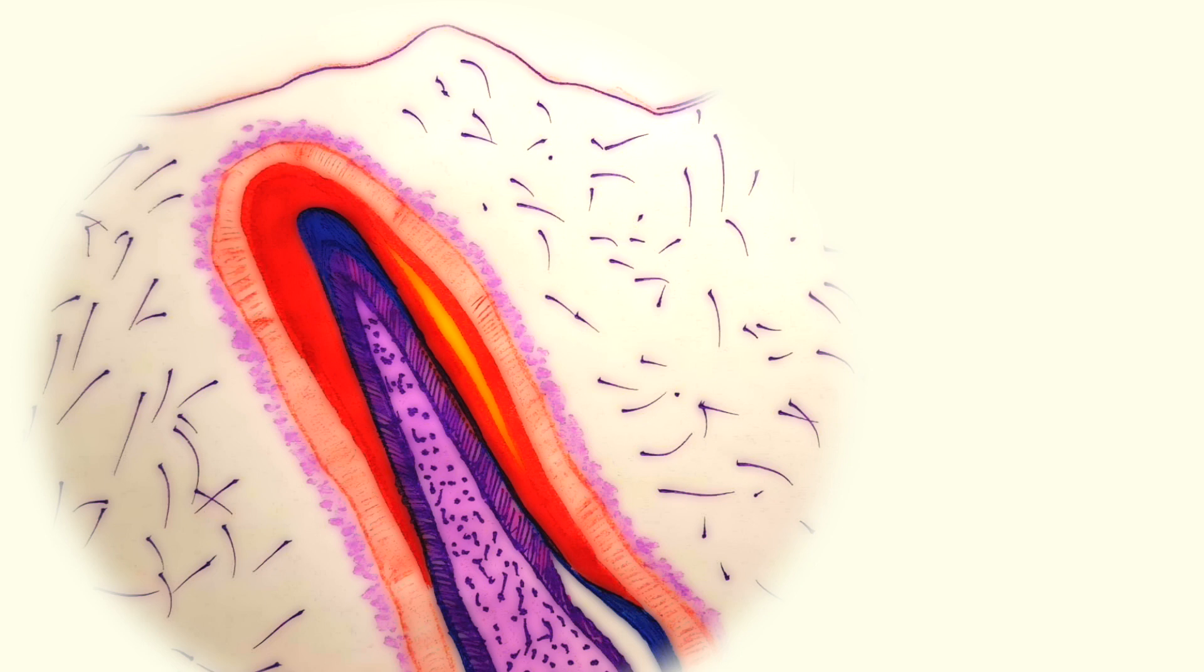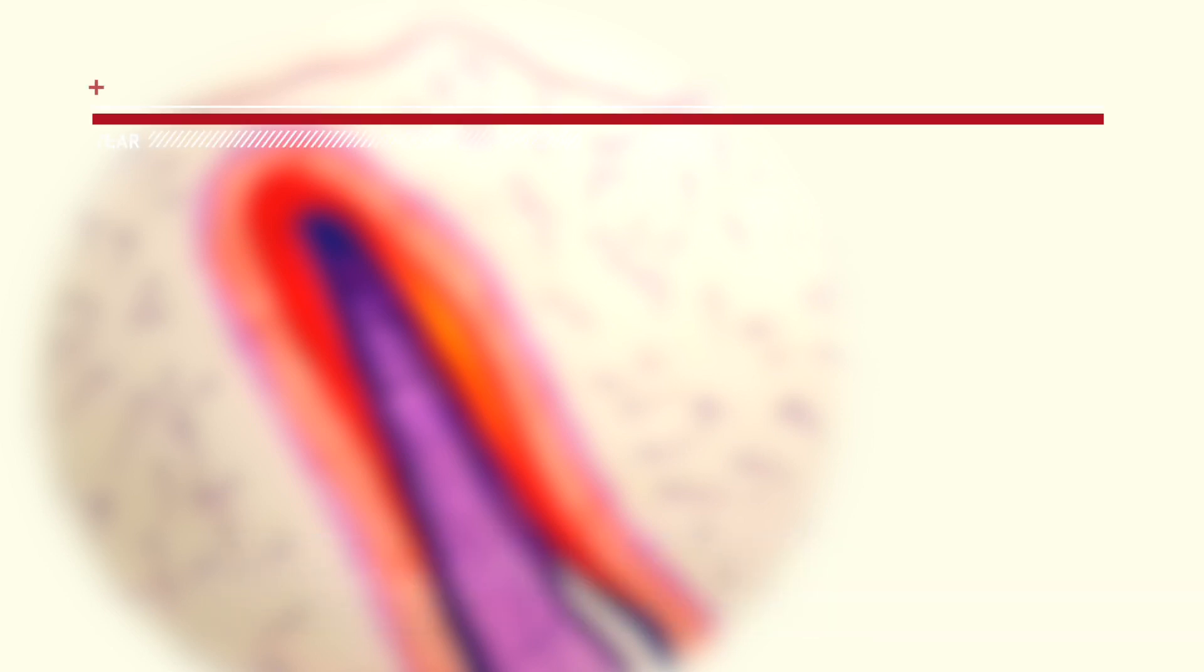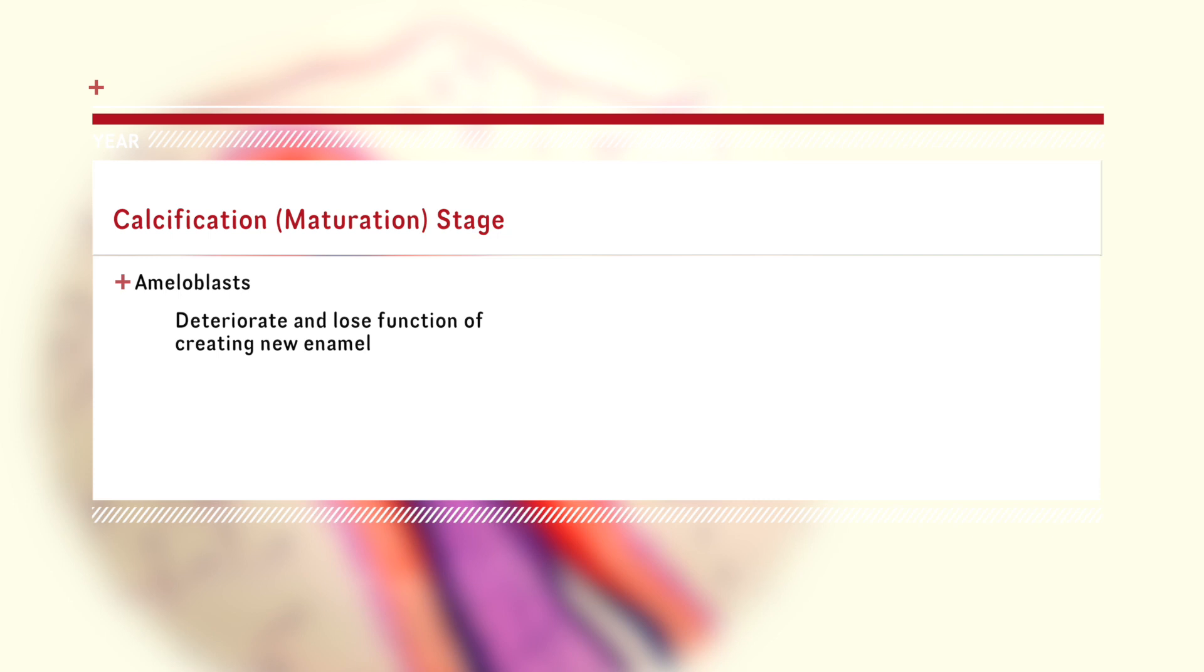With the matrices in place, the next stage is the final calcification of the enamel and dentin. In this stage, the odontoblasts, which form dentin, still exist in the dental papilla, unlike the ameloblasts, which degenerate and lose the function of forming new enamel. This is the reason enamel doesn't naturally regenerate, unlike dentin, which continues to form throughout life.